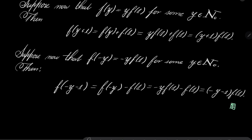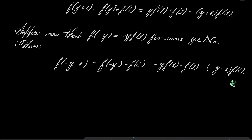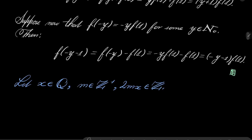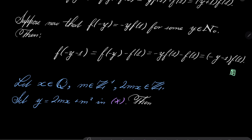Now the crucial part. Let x be any rational number and let m be a positive integer such that 2mx is an integer. Such m can certainly be found since we are dealing with rational numbers — every rational number can be written as a fraction, and if we multiply by the denominator we get an integer. Now let's set y to be 2mx plus m squared in our condition asterisk.